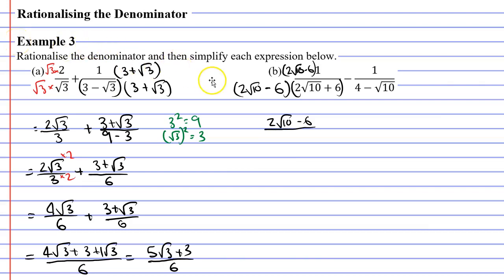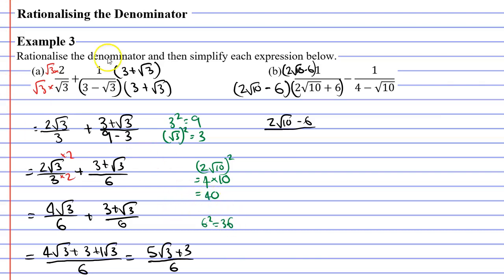Looking at our denominator, we have two terms: two root ten and six — the same two terms in each set of brackets — so we square them separately. Squaring two root ten: two times two is four, and squaring the square root gives us back ten, so four times ten is forty. Six squared is thirty-six. So we have forty and thirty-six and we subtract them: forty minus thirty-six.